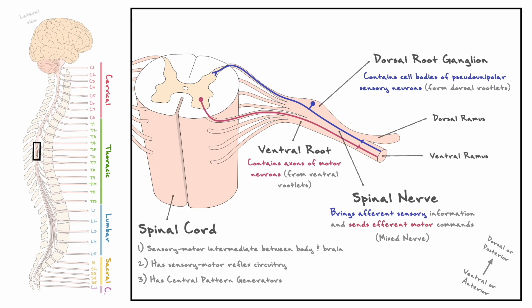Although both rami are spinal nerves and carry sensory motor information, the main difference between the two is that the dorsal ramus carries this information to supply the posterior trunk and the posterior head, and the ventral ramus carries this information to supply the limbs and the anterior portion of the trunk. One important element is that sensory information is segregated from motor information as it enters dorsally, and motor information leaves ventrally. This will be really important to keep in mind when we cover the internal anatomy of the spinal cord.